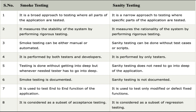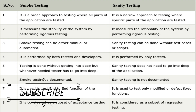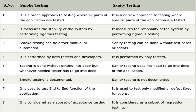Point three: smoke testing can be either manual or automated. In automation, scripts testing the most important priority-one functions are executed. Sanity testing can be done without formal test cases or test scripts, tested manually for impacted functionalities or defect fixes, though it can also be automated. Point four: smoke testing is performed by both testers and developers, whereas sanity testing is performed only by testers.